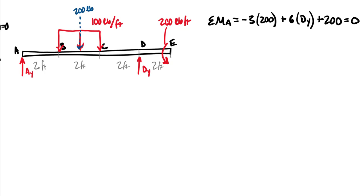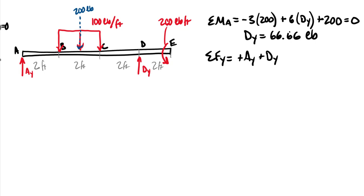From the moment equation, D sub Y equals 66.66 pounds. Summing forces in the Y direction: A_Y plus D_Y minus 200 equals zero. The couple does not enter this force equation. Substituting D_Y of 66.66, we find A_Y equals 133.33 pounds.